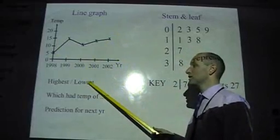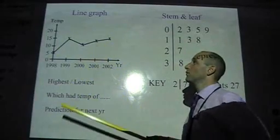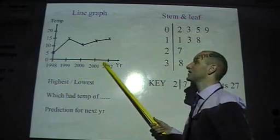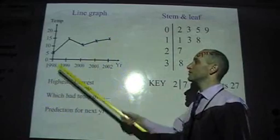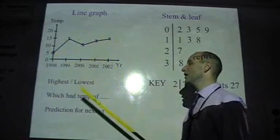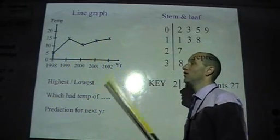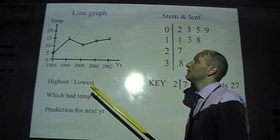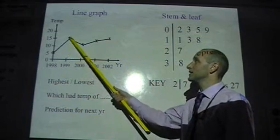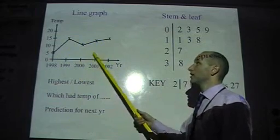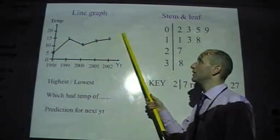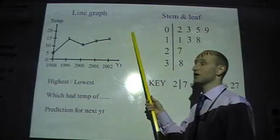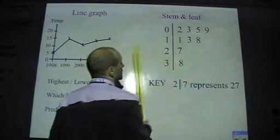They'll ask you questions along the lines of, looking at the graph, what year was the highest temperature? 2002. What year was the lowest temperature? 1998. Which year had a temperature of, they might say, 15. And you could say 1999 and 2001. And they might ask you to predict. And it's just looking at the general trend of the line and predicting out here for the next year. Fairly common sense.